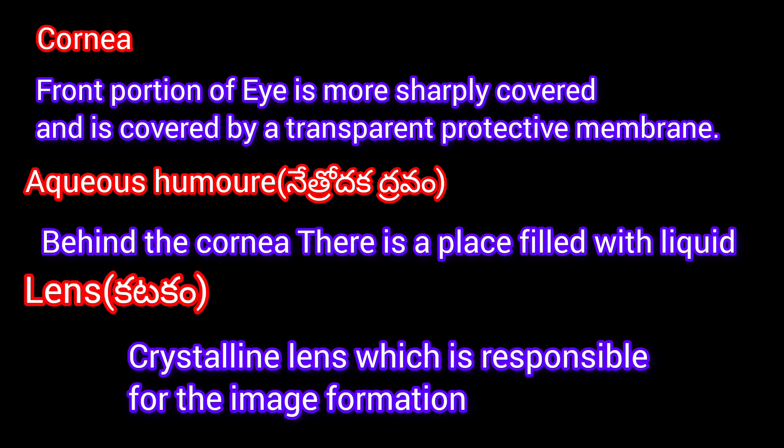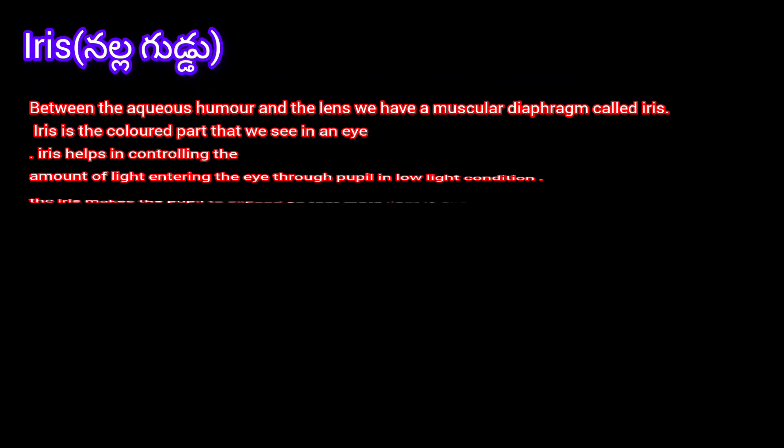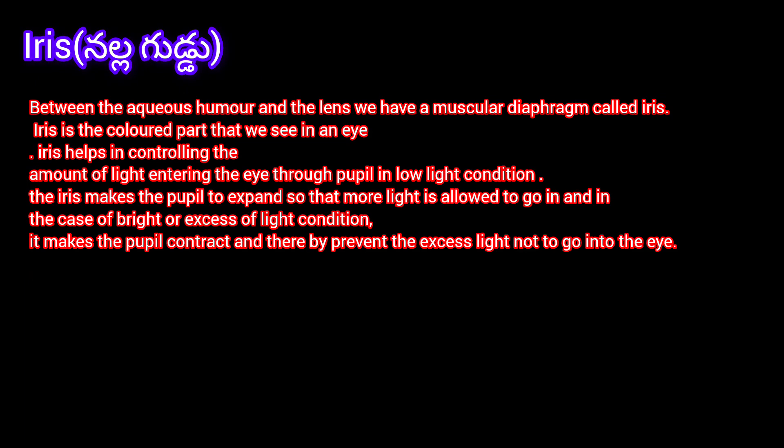Lens (Katakam): The crystalline lens is responsible for image formation. Between the aqueous humor and the lens, we have a muscular diaphragm called the iris. The iris is the colored part that we see in an eye.